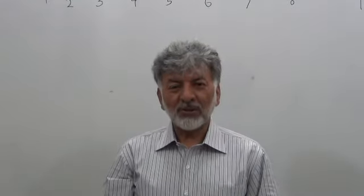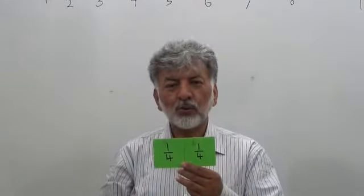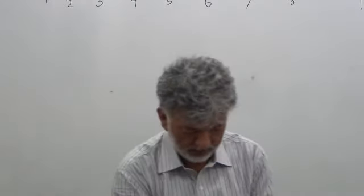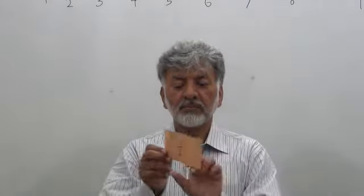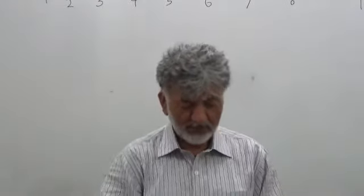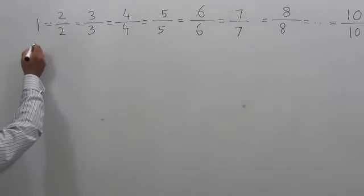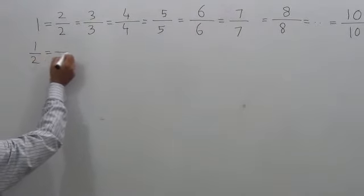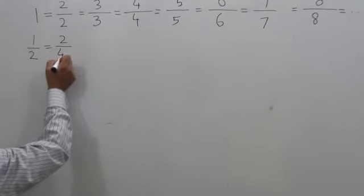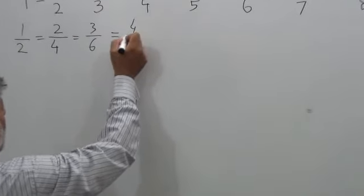Now I will show you equivalence of half. Half, two quarters. Half, three sixths. Half, four eighths. Now let's record them. Let's record equivalence of half. So half is two quarters, three sixths, four eighths.